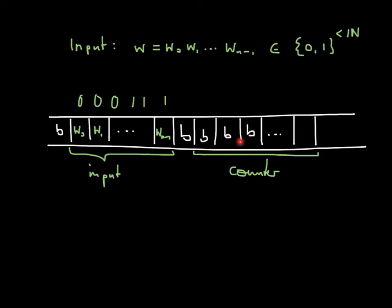So again, the idea is: scan the input from left to right. As long as we read 0s, increase the counter; decrease the counter by 1 once we read 1s. Once we hit the end of the input, check the counter whether it's all the way back to 0.